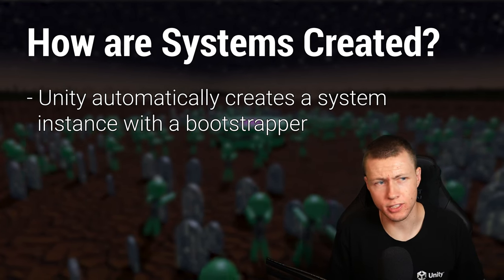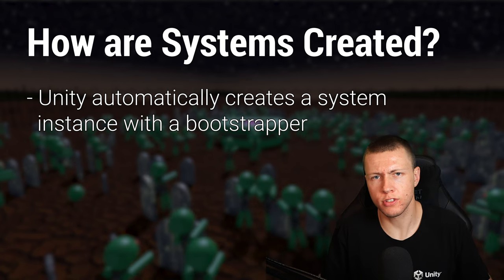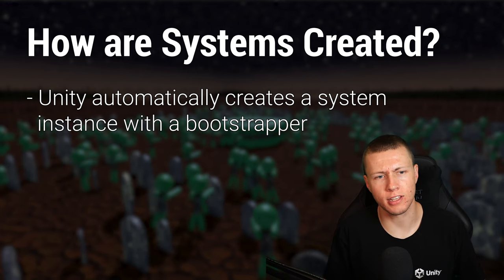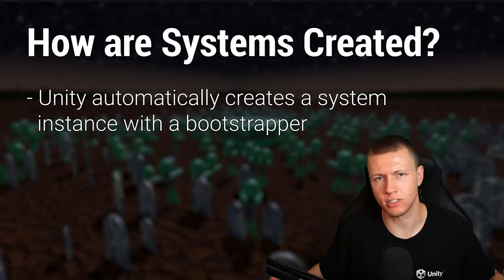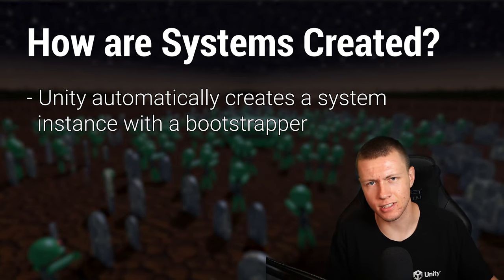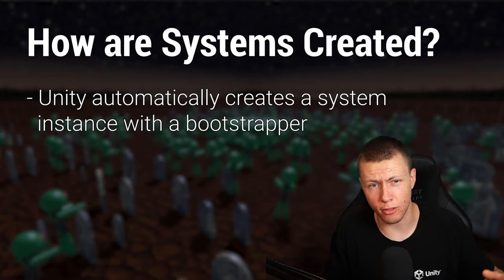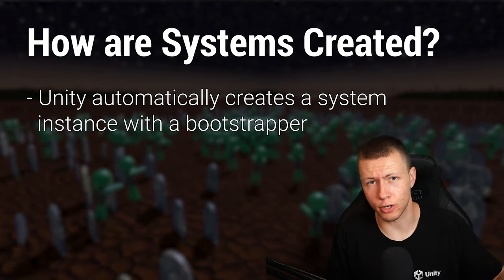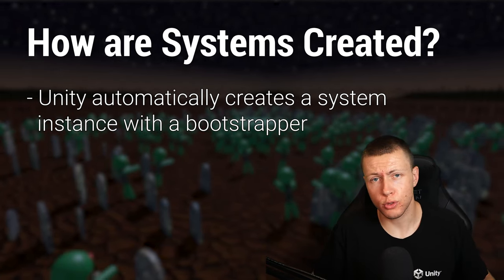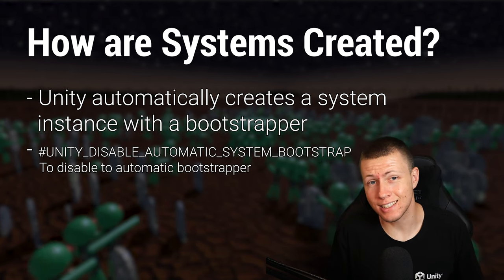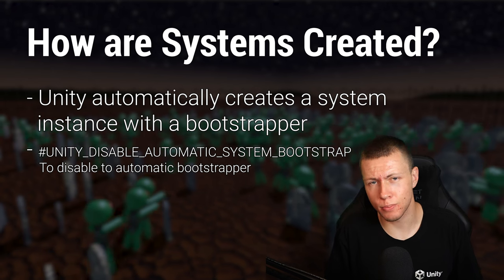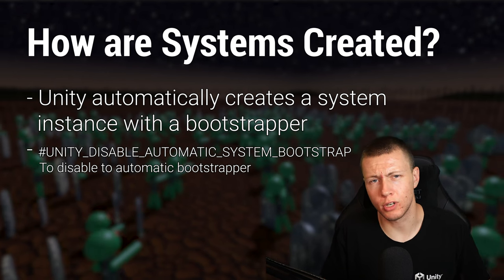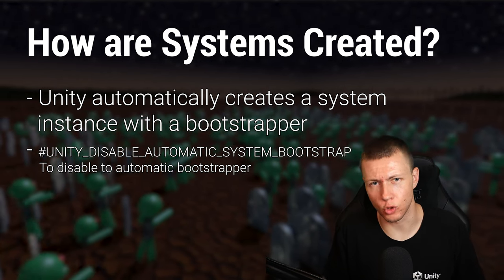How do we actually create these systems? Unity has a bootstrapping process that automatically creates the systems in our game. Any system we create out of the box will be automatically instantiated by the built-in bootstrapper, making it active in our world so it starts updating. If you want a custom setup, you can disable the automatic bootstrapper using a scripting define, but I wouldn't recommend it unless you have a specific reason, as you'll need to create your own bootstrapper.